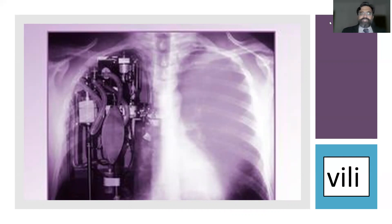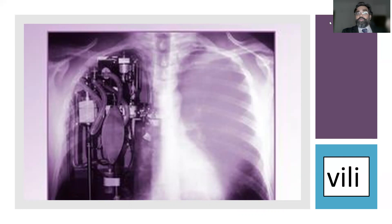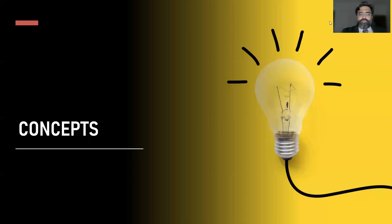This is the basis behind ventilator-induced lung injury. A seemingly high PEEP would actually mean more collapse — for example, a PEEP of 18 with a pleural pressure of 20 still means the lung will collapse. This is typically seen in obese patients and those who have received significant resuscitation.